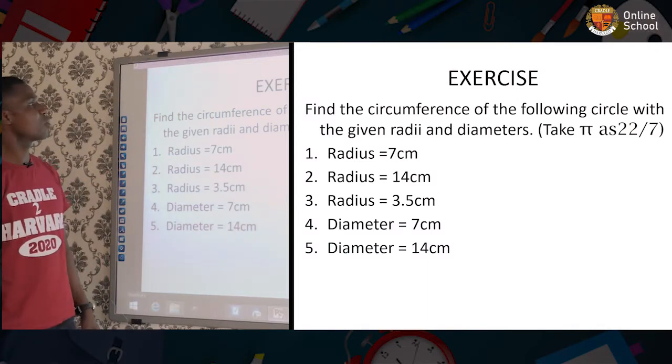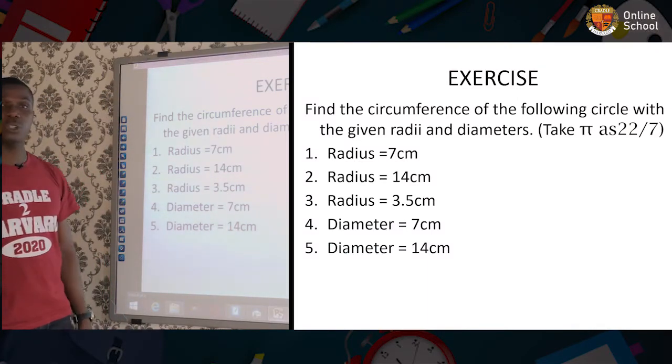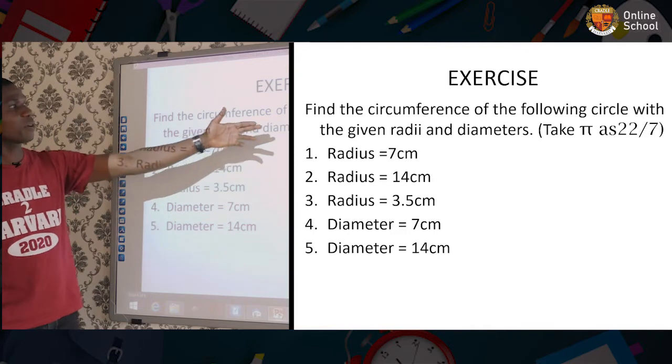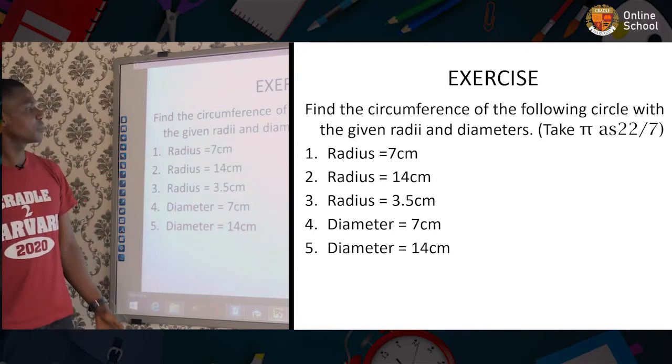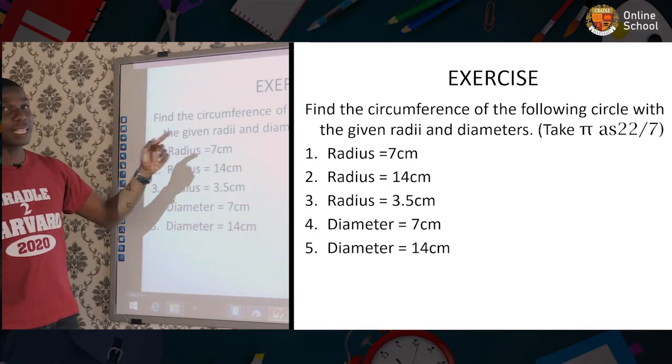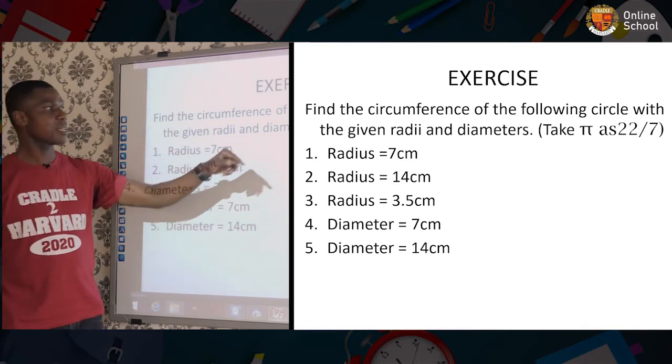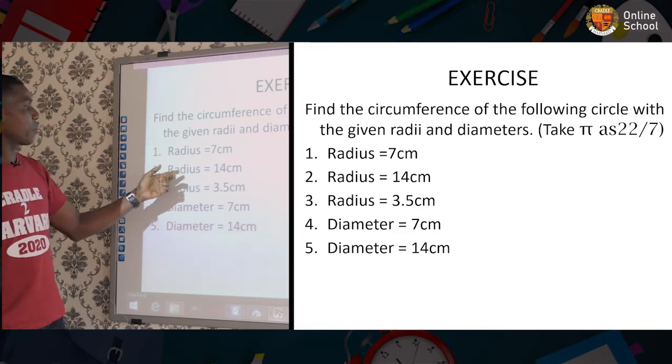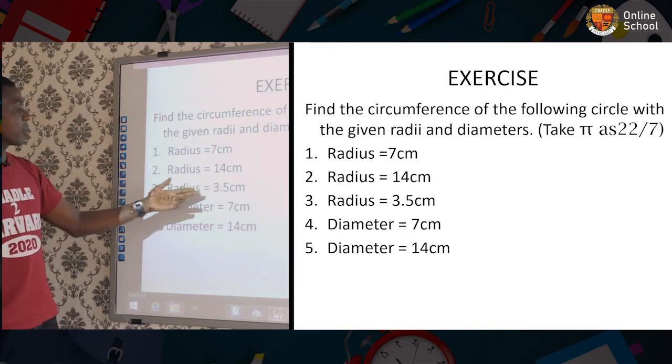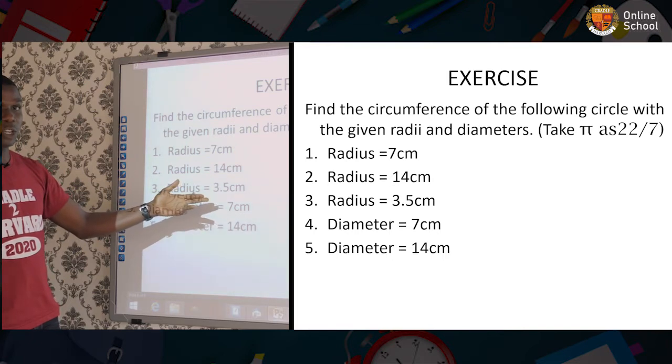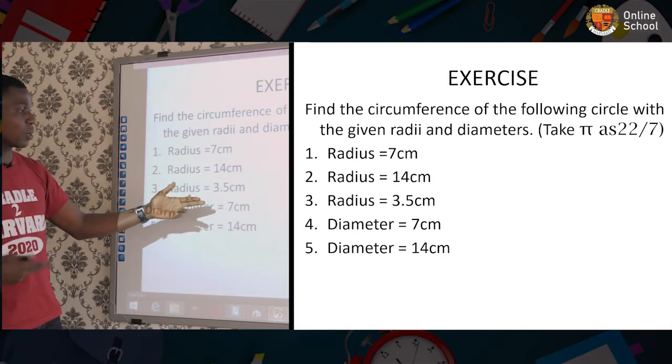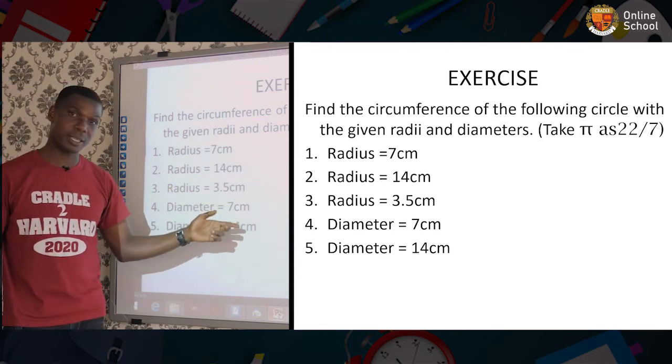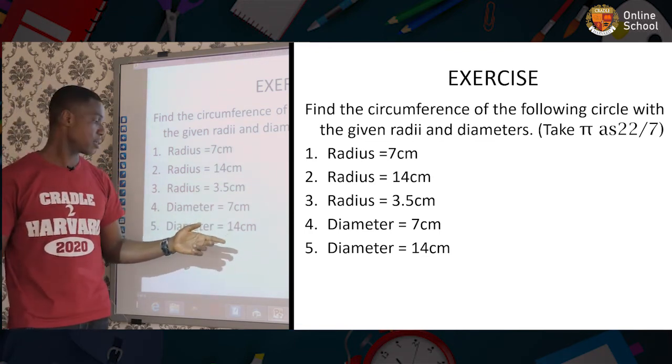You have this little exercise to go through and practice by yourself. You have to find the circumference of the following circles with the given radii. Radii is the plural of radius. And diameter. Take pi as 22 over 7. When the radius is 7 cm. Number 2, 14 cm. When the radius is 3.5 cm. What am I expecting you to do? Change it to an improper fraction. When the diameter is 7 cm, and when the diameter is 14 cm.